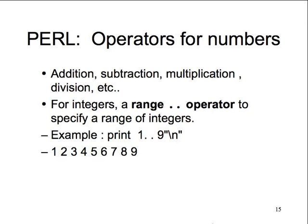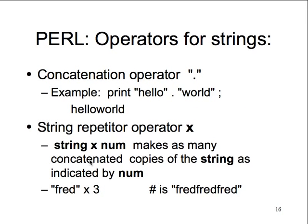Operators for numbers include addition, subtraction, multiplication, and a range operator to specify a range like one to nine. Operators for strings include concatenation using the dot - so 'print hello . world' puts them together. You'd think the plus sign would do it but it's the dot, which is more PHP-like. String repetition is also supported: 'Fred x 3' equals 'Fred Fred Fred'. So you can print 'error' as many times as you want.